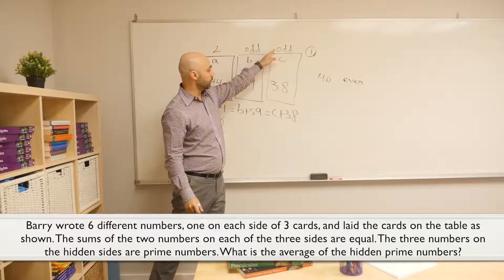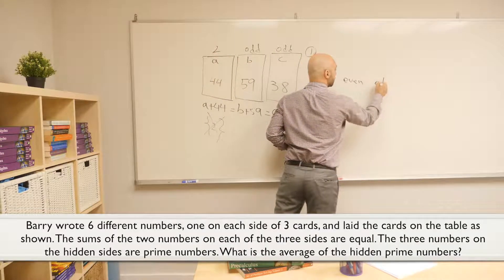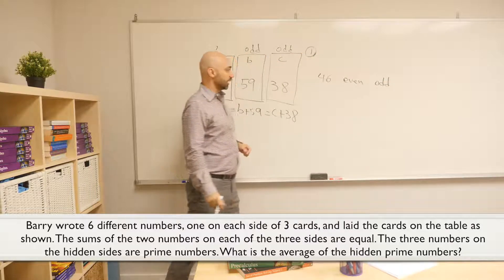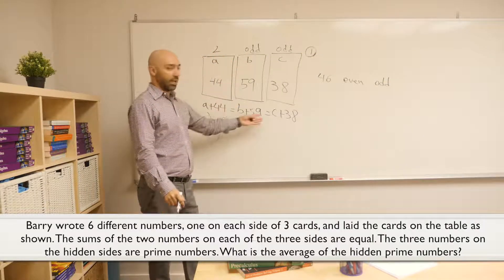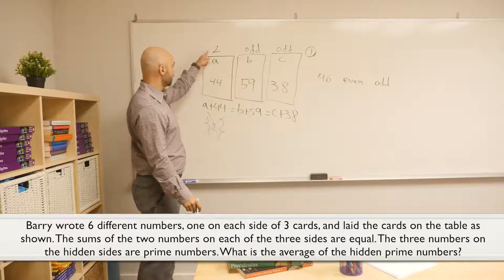Now, odd number plus an even number, that's odd. Another contradiction. So that's not possible because we know they all have to be the same numbers. Two cannot be here.